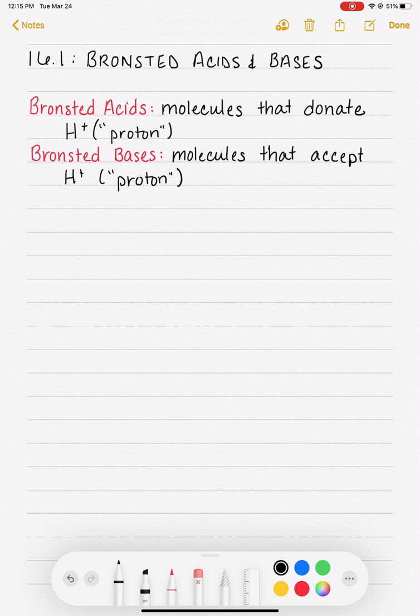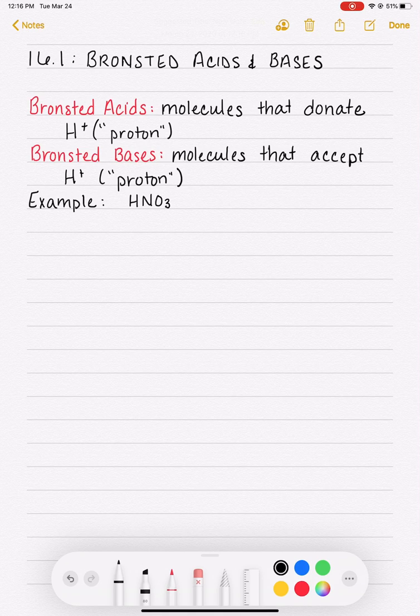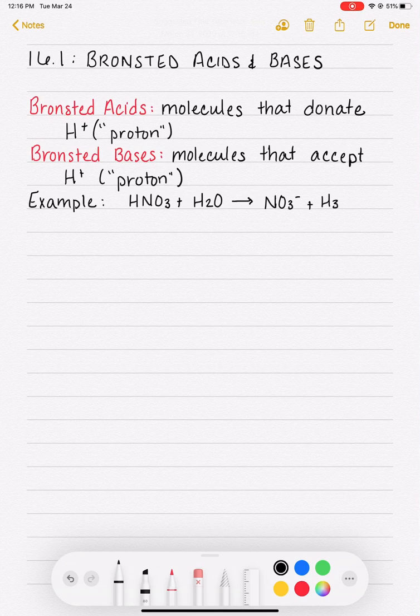So the acids are proton donors and the bases are the proton acceptors. In order to classify a molecule as either an acid or a base, we really need to see the molecule in a chemical reaction, like HNO3 + H2O when they react together, they make NO3- and H3O+.